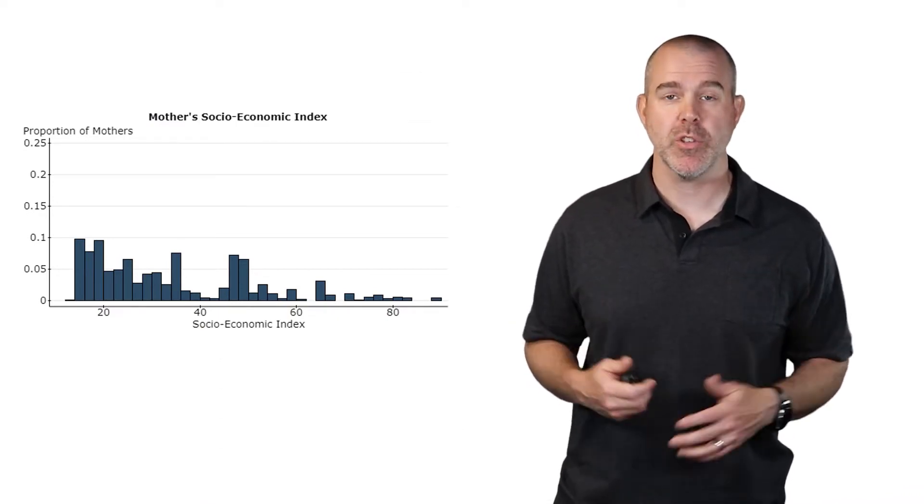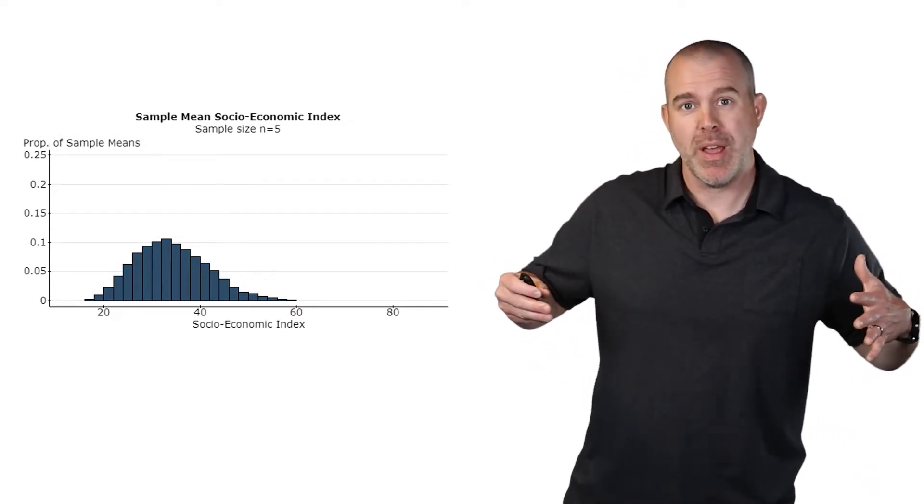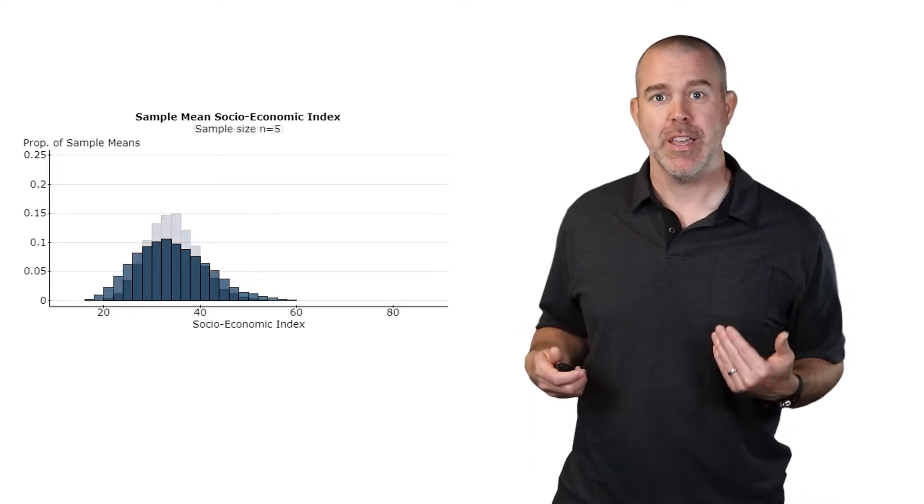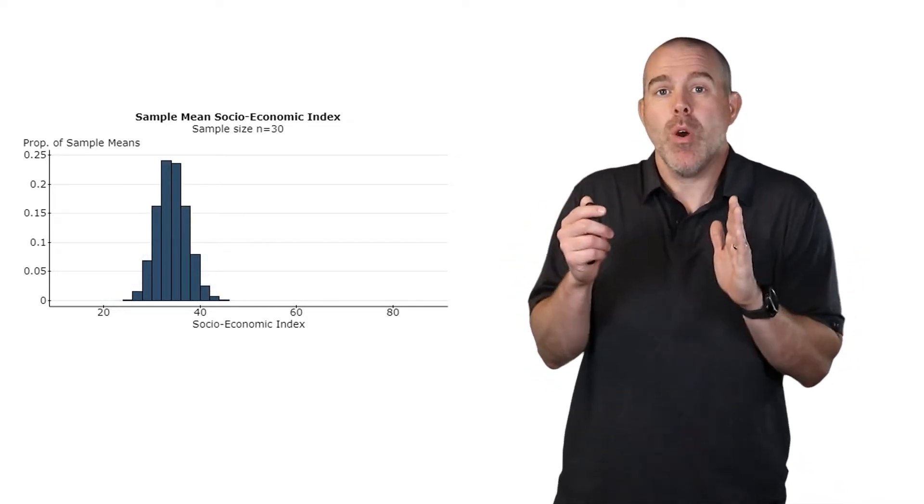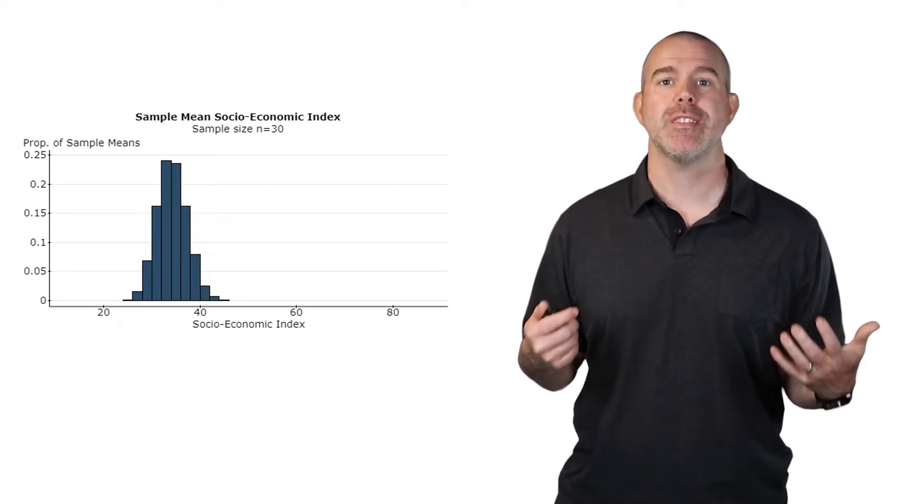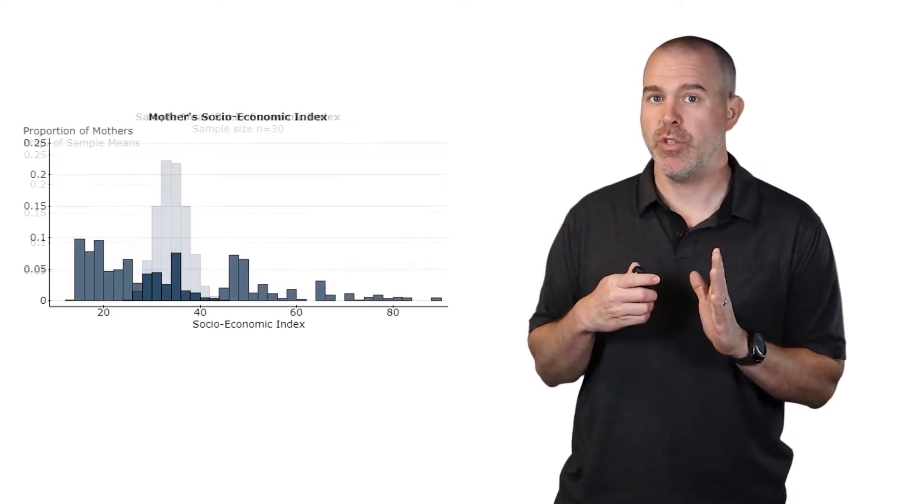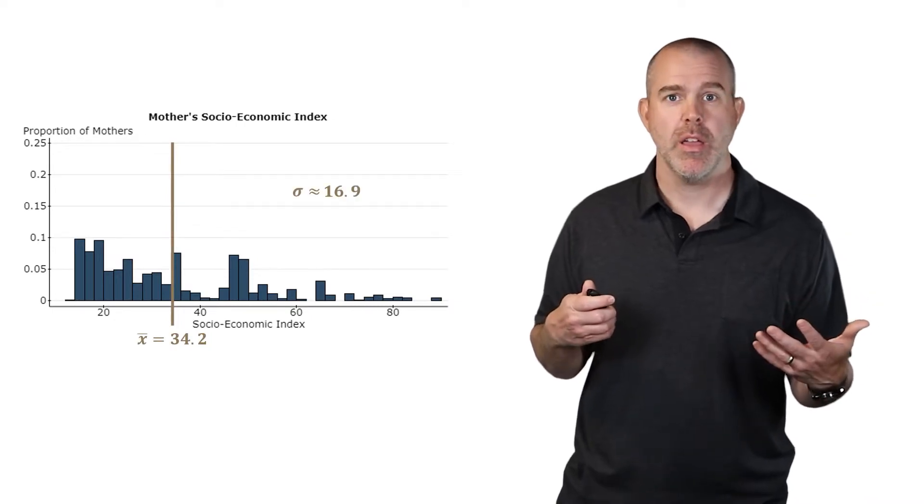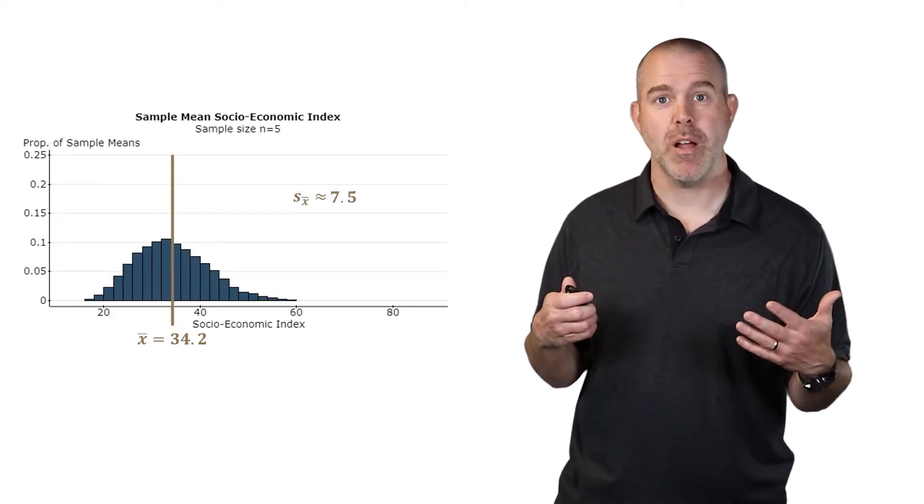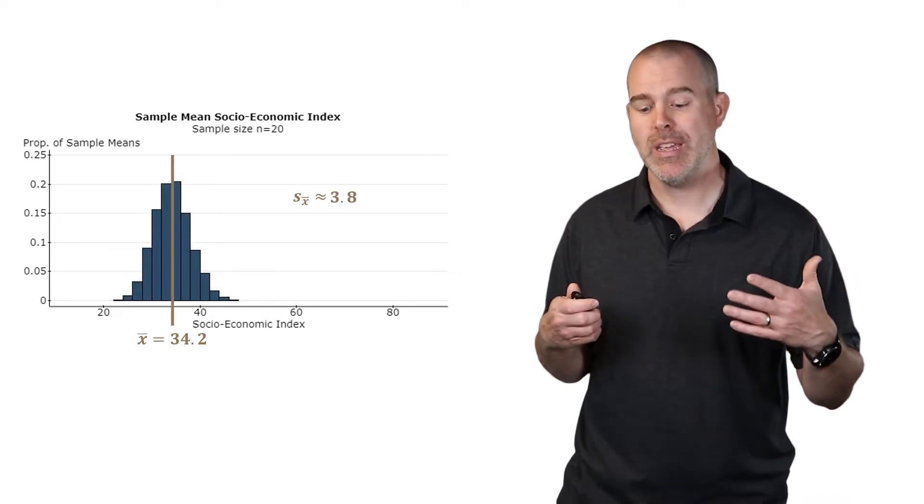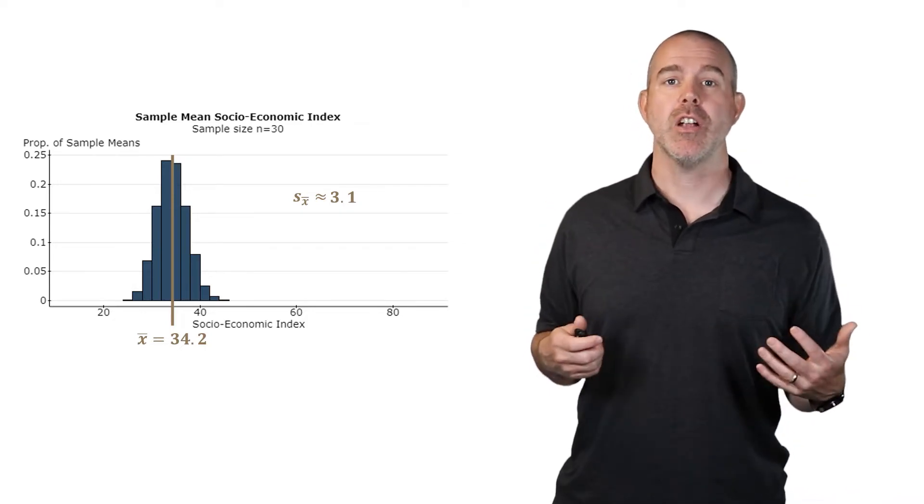Let's do some other ones here. Here's the distribution of the mother's socioeconomic status. Here's a distribution of the sample means if we did only sample size 5. You can see more spread out, definitely still skewed right a little bit. Here's that sample of size 10. What if we do 20 and then 30? You see we're getting more and more condensed the larger our sample size is, because the more individuals in our sample, the more likely we're going to end up right close to that actual mean.